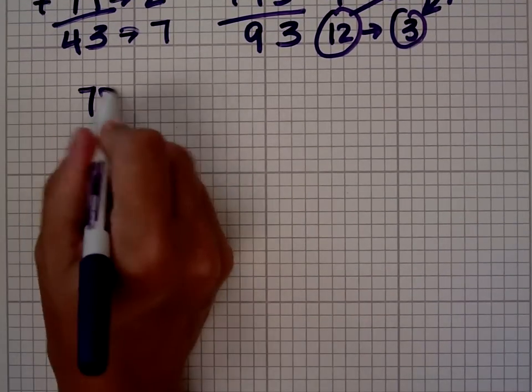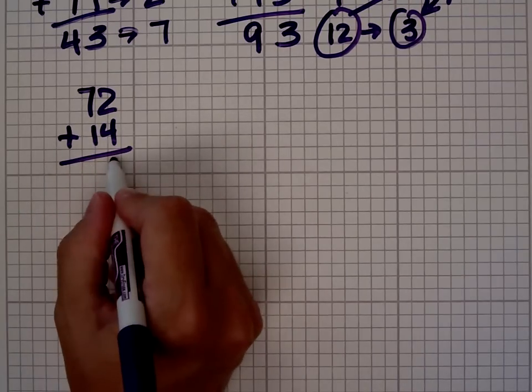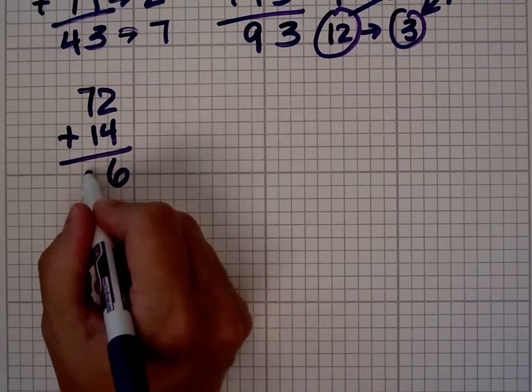Let's try another one. 72 plus 14. 2 plus 4 is 6. 1 plus 7 is 8.